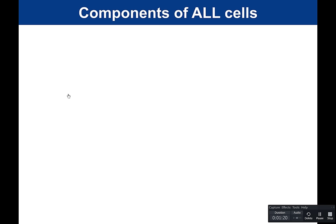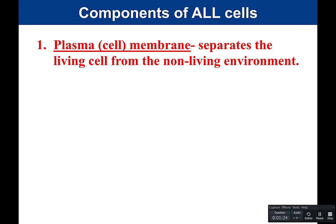We'll start by talking about structures found in all cells, then break down how prokaryotic and eukaryotic cells differ. All cells have a plasma or cell membrane — a phospholipid bilayer that separates the living cell from the non-living environment. Not all cells have a cell wall; animal cells and protozoan cells, for example, do not.